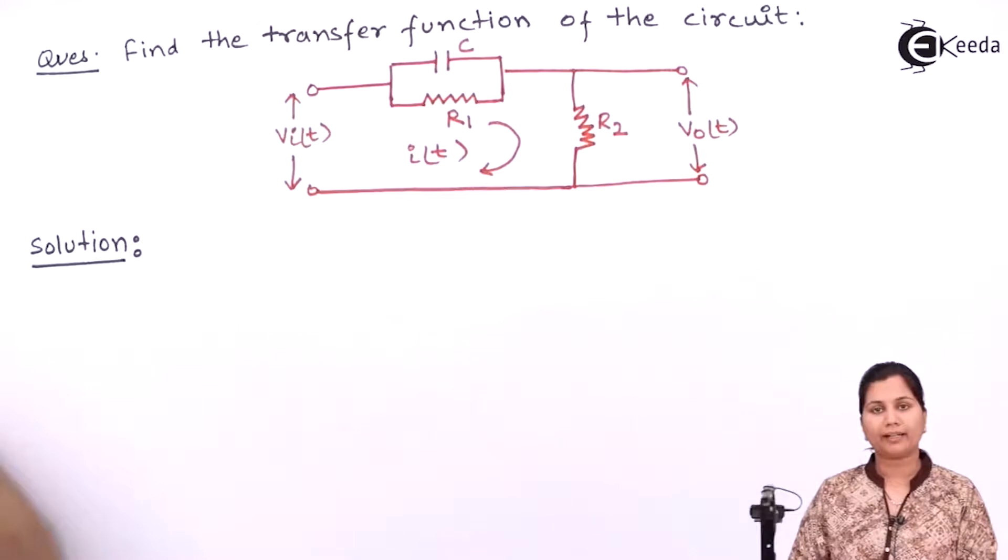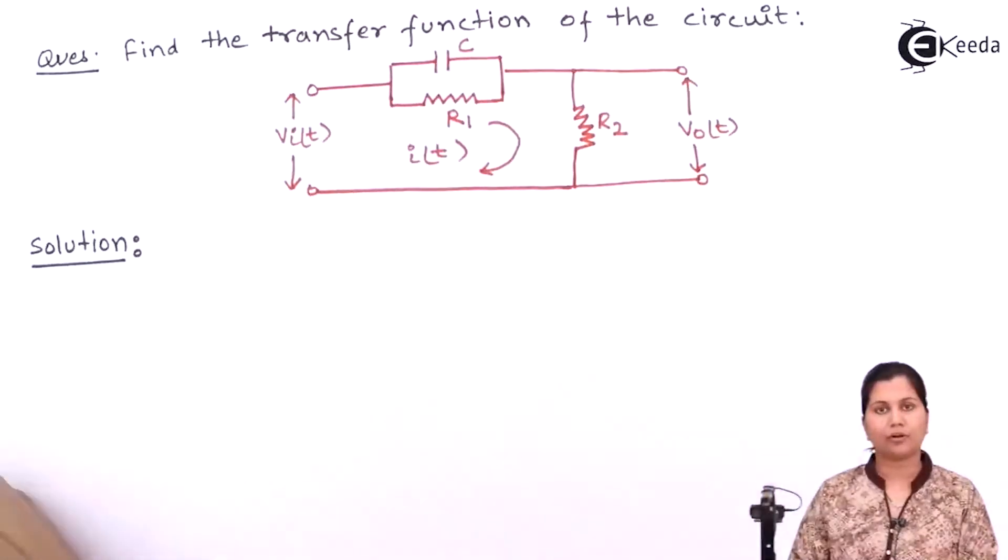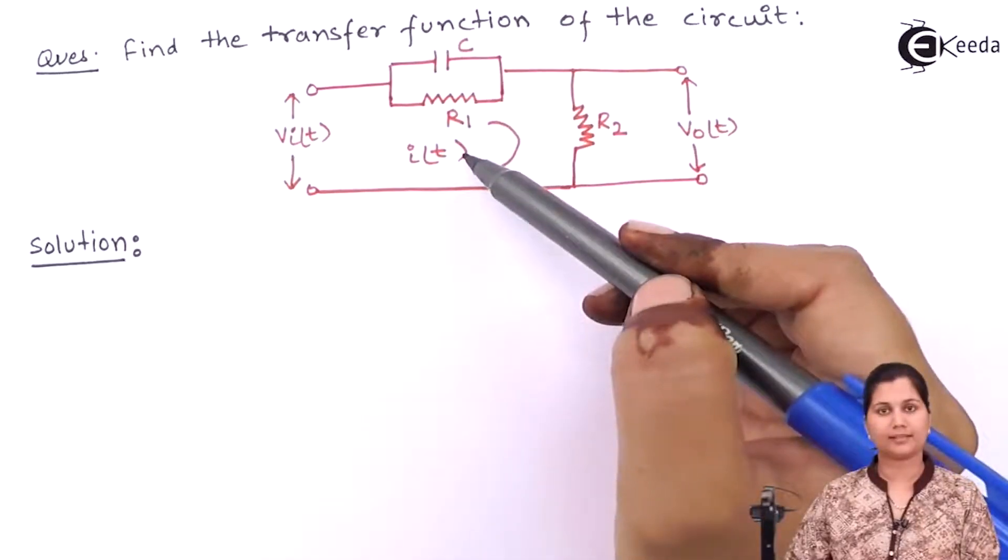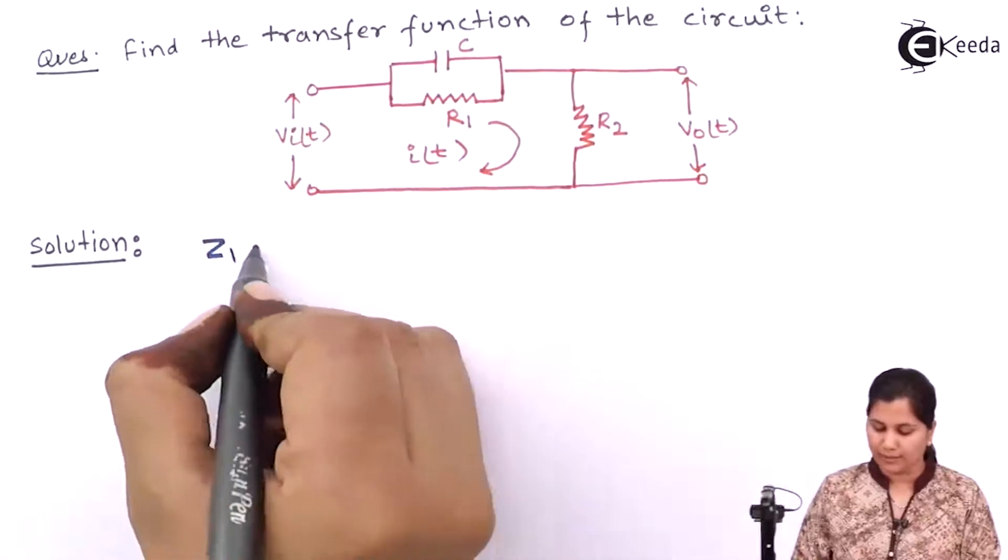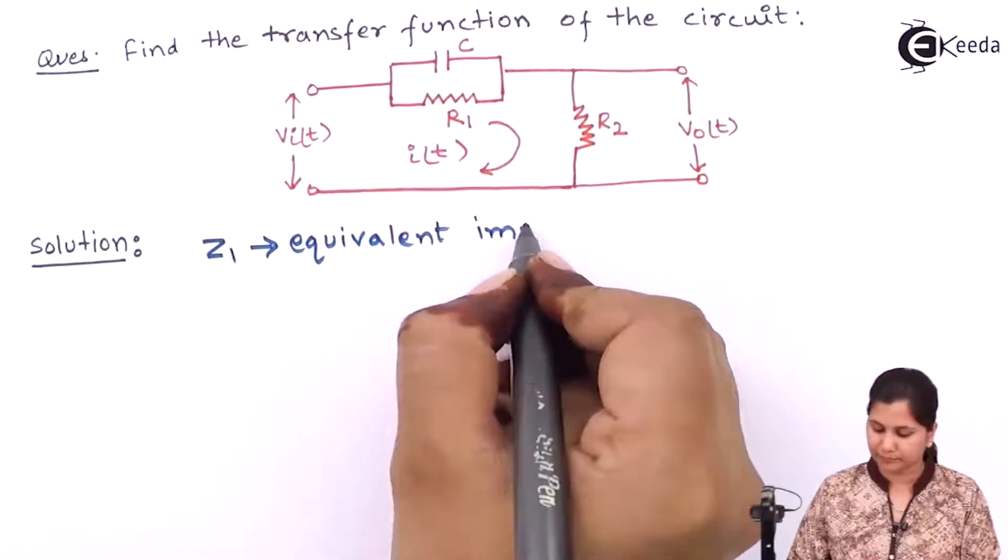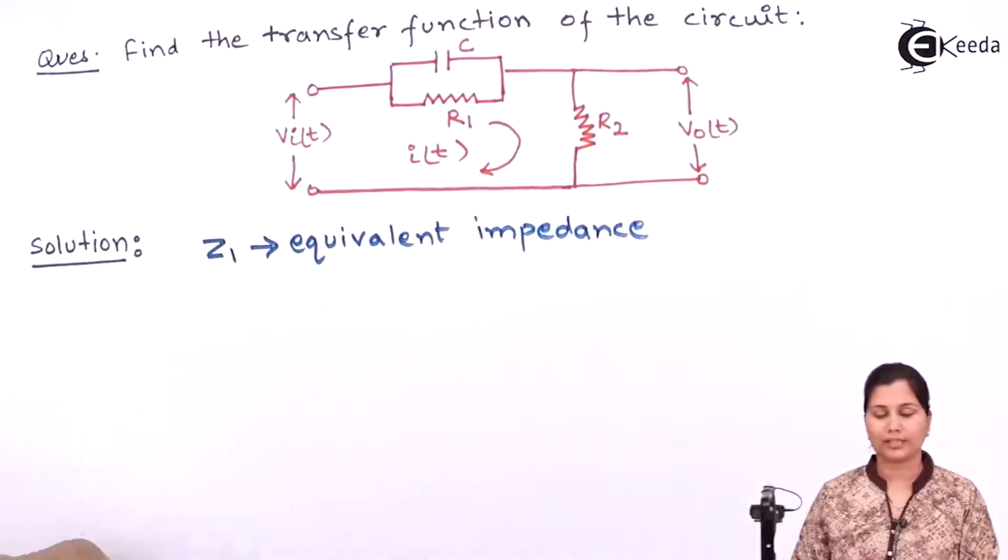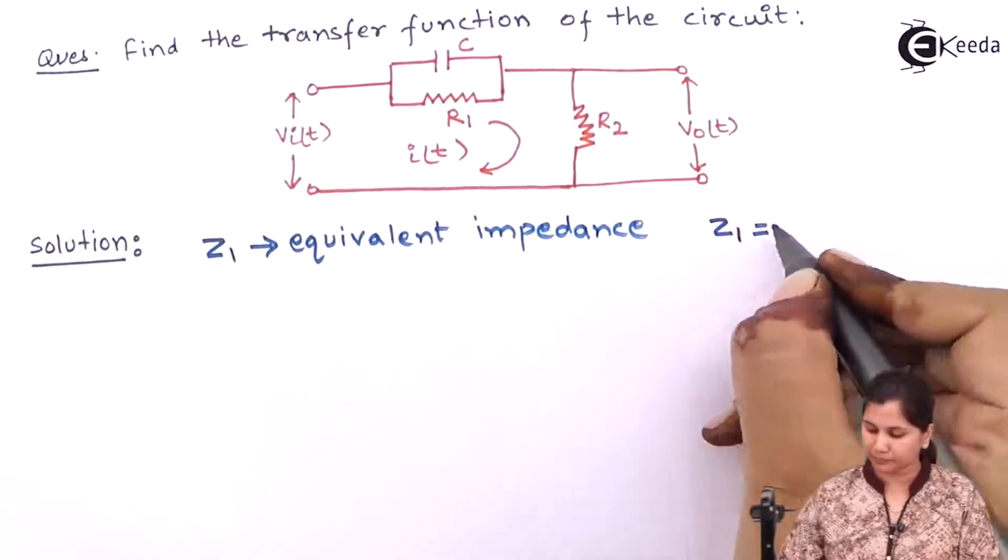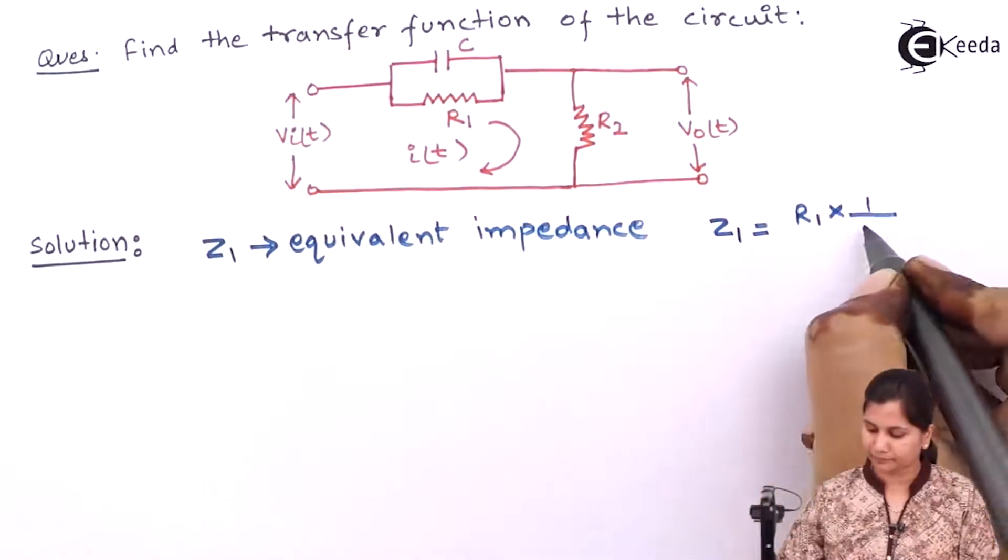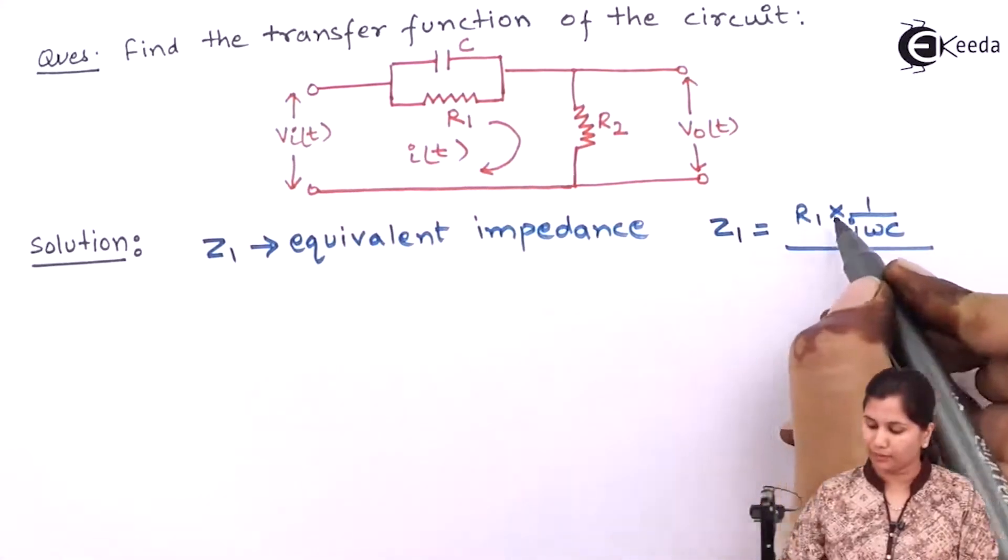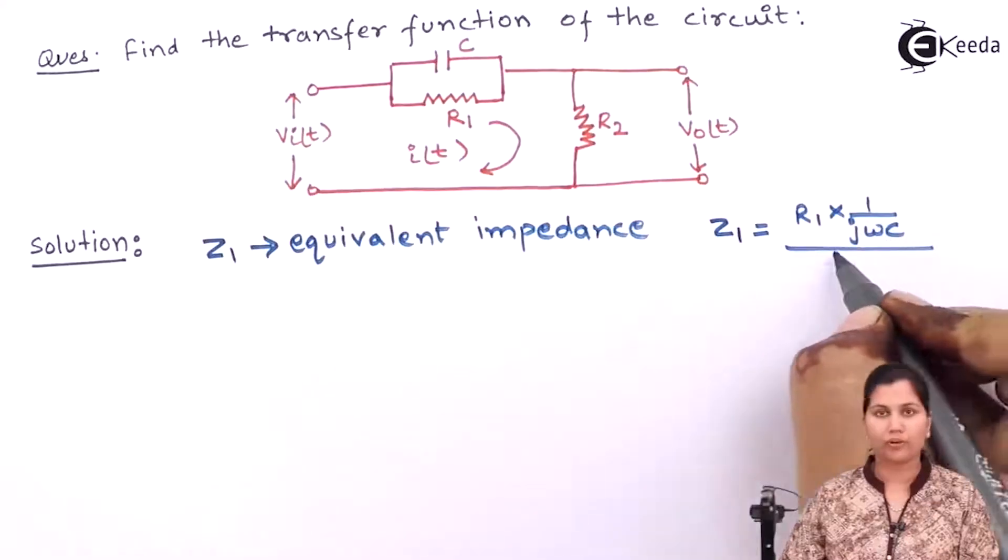First we will find out the equivalent impedance of this parallel combination of the capacitor and the resistance R1. So suppose Z1 is the equivalent impedance of this parallel combination of C and R1. So the value of this Z1 will be the parallel combination, so R1 into 1 upon jωC.